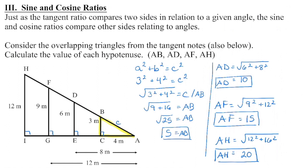I've got my diagram drawn here like we had yesterday, with right angles filled in, and we're going to compare different side lengths using angle A as our reference angle. From angle A, the hypotenuse is always the longest side — in this case, that's little c across from angle C. From angle A, this is my opposite side, and this is my adjacent side.